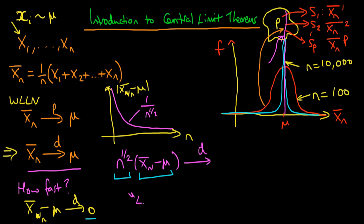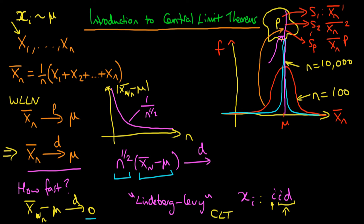It turns out that a particular central limit theorem — the Lindberg-Lévy central limit theorem — which concerns xᵢ that are IID (independent and identically distributed, meaning they all come from the same population), states that n^(1/2) times (x̄ₙ − μ) tends to a non-degenerate distribution: a normally distributed random variable with mean 0 and variance σ², where σ² is the variance of an individual xᵢ.